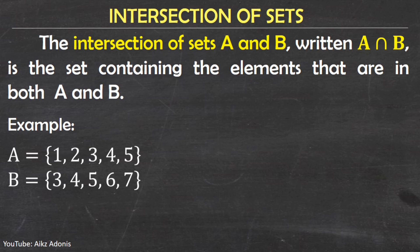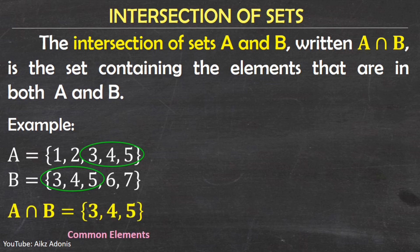For example, in set A the elements are 1, 2, 3, 4, and 5, while in set B the elements are 3, 4, 5, 6, and 7. What are the common elements in set A and set B? The common elements are 3, 4, and 5. Therefore, the intersection of set A and set B is equal to the elements 3, 4, and 5. When we say intersection, there are common elements.